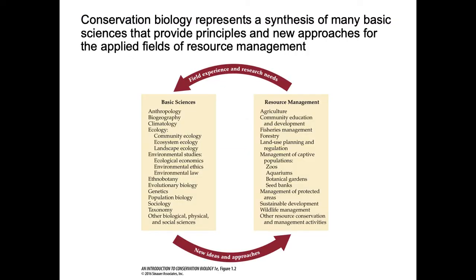Conservation biology is very multidisciplinary, and it includes the basic sciences as well as resource management — including things studying people, studying animals, and all kinds of different things. The basic sciences include everything from climate to ecology to environmental studies, which includes economics, ethics, and law. Evolution is important, as well as population biology, and it also includes things like taxonomy.